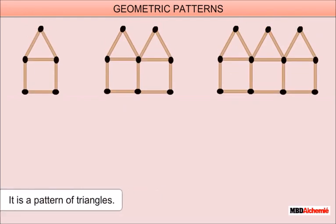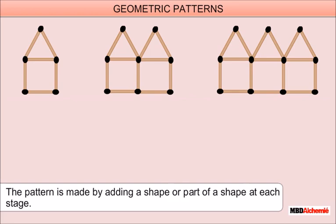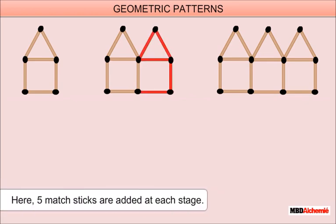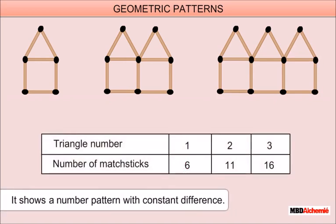It is a pattern of triangles. The pattern is made by adding a shape or part of a shape at each stage. Here, five matchsticks are added at each stage. It shows a number pattern with constant difference.